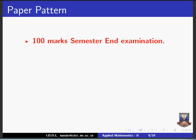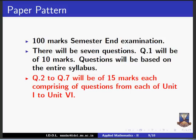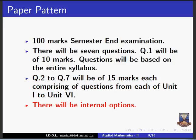About the paper pattern: the semester examination will be of 100 marks. There will be 7 questions. Question 1 will be of 10 marks and will consist of questions related to the entire syllabus — generally attempting 2 out of 3, 5 marks each. Questions 2 to 7 will each be of 15 marks, each coming from one of the 6 units, unit 1 to unit 6. There will be internal options only, and no external options in the paper.